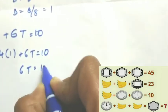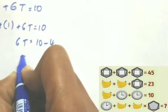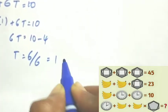2T is equal to 10 minus 4. T is equal to 6 divided by 2, so time value is also equal to 3.